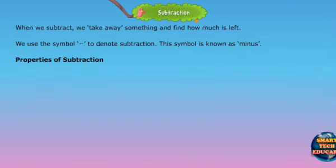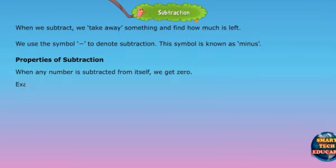Properties of subtraction. When any number is subtracted from itself, we get zero. Example: 5 minus 5 equals 0.